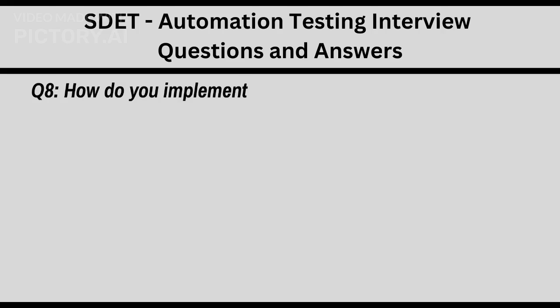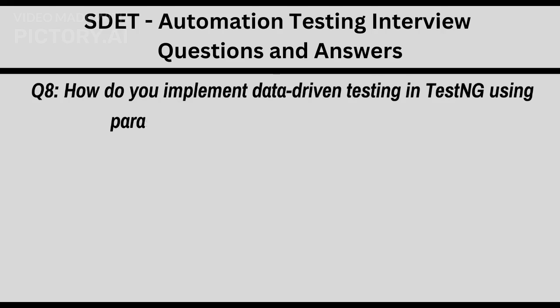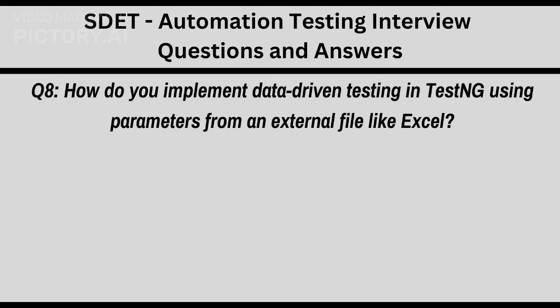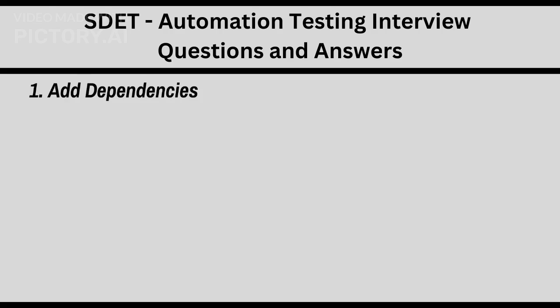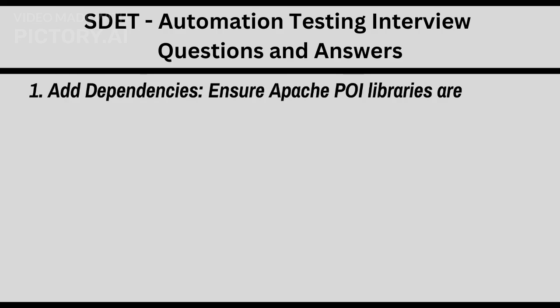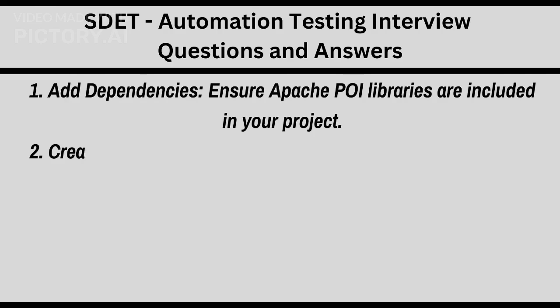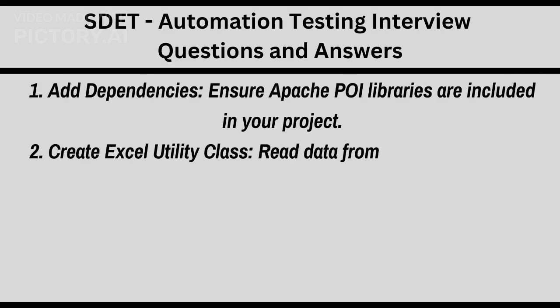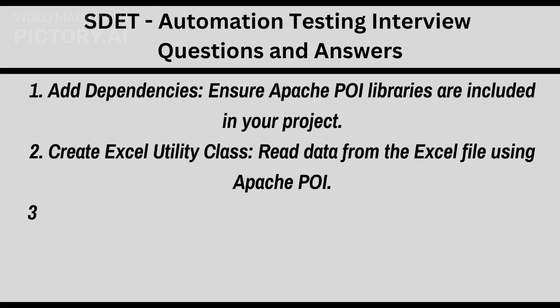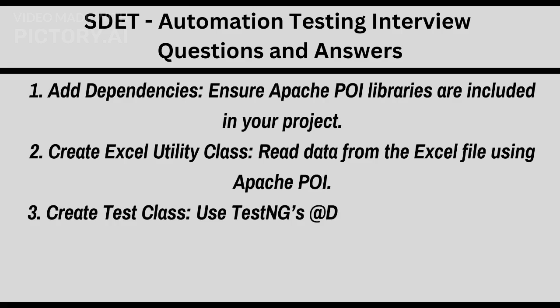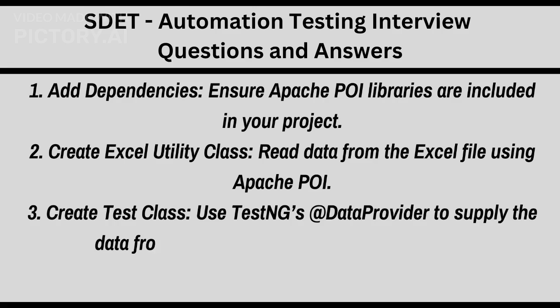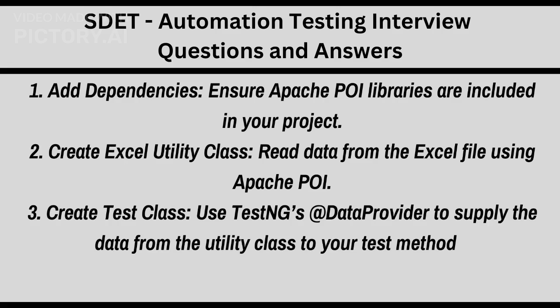Q8: How do you implement data-driven testing in TestNG using parameters from an external file like Excel? 1. Add dependencies: ensure Apache POI libraries are included in your project. 2. Create an Excel utility class: read data from the Excel file using Apache POI. 3. Create a test class: use TestNG's @DataProvider to supply the data from the utility class to your test methods.